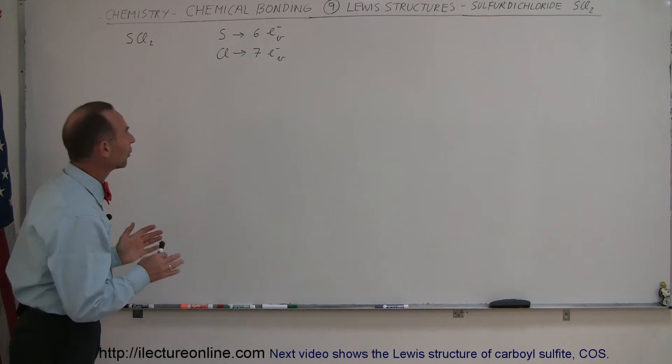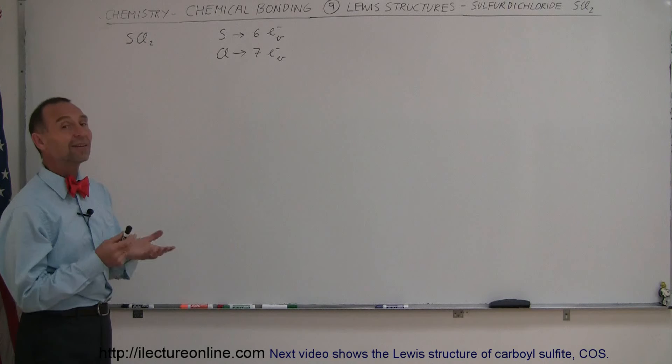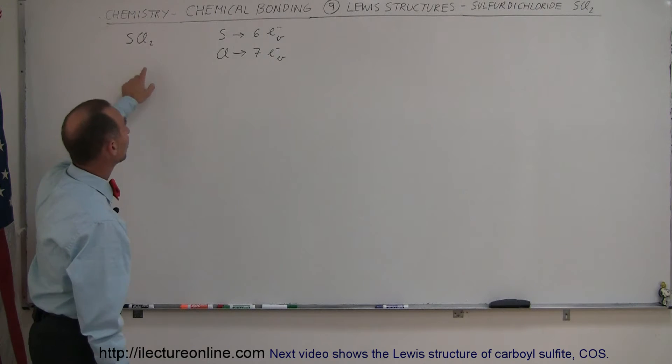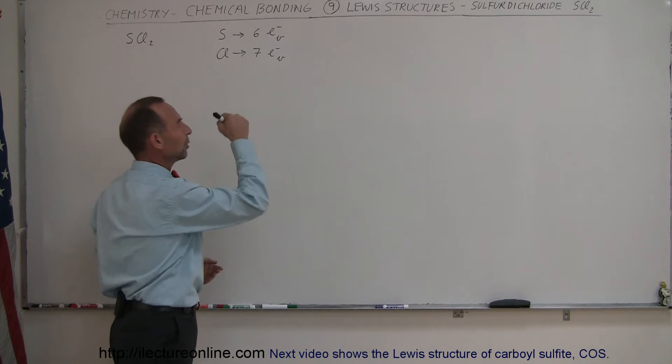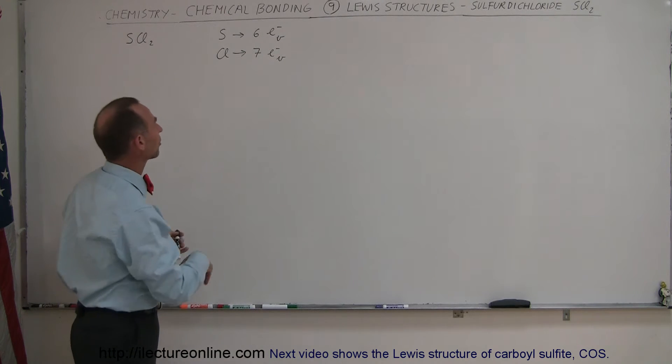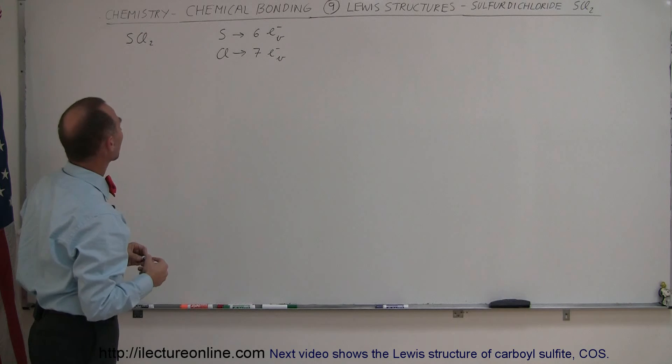First of all, we're going to take a look and see how many valence electrons each atom has. Sulfur has six valence electrons—that's how I write it, the electron symbol with a little sub v that means valence electrons—and chlorine has seven valence electrons.